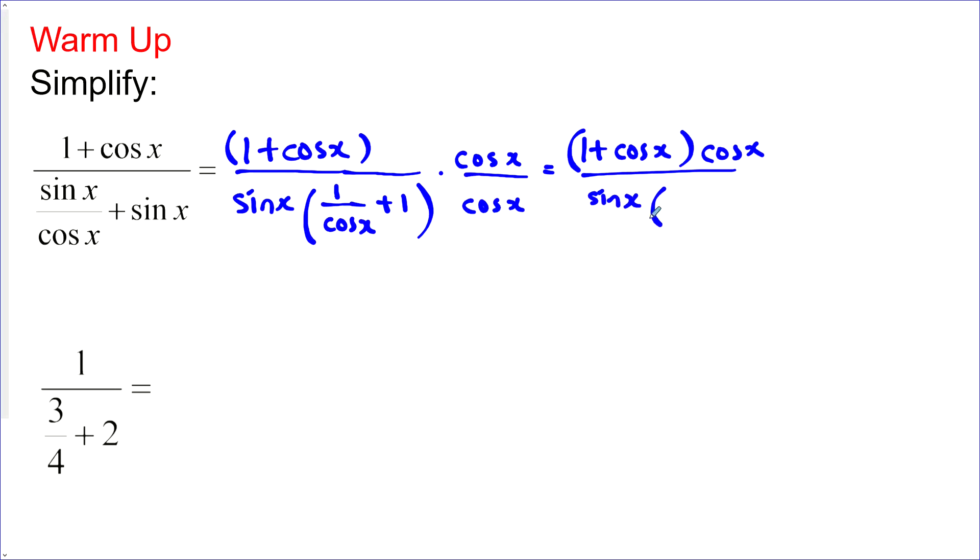And this is 1 plus cos x. Now, these two will cancel, and we're just left with cos over sin, and we could leave it as cos over sin, or maybe cotan x would be nice.